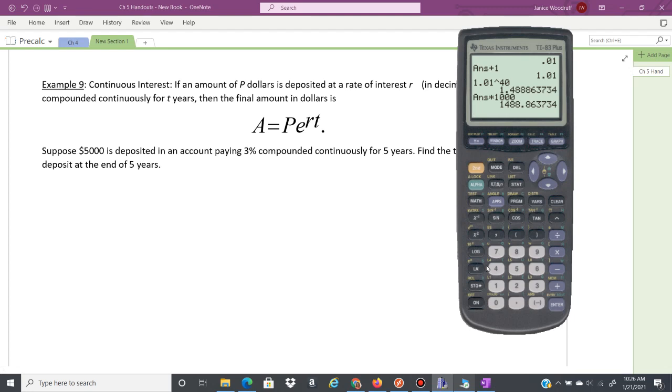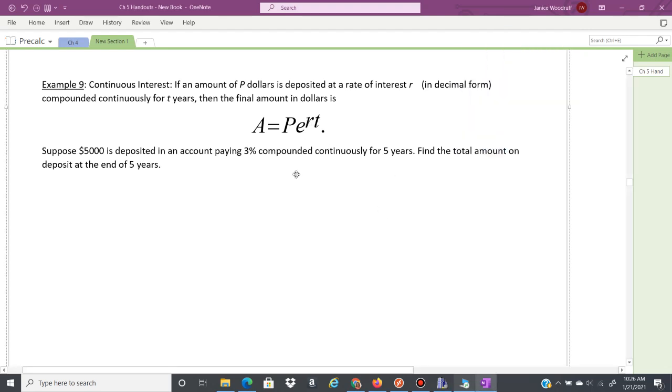So you have a principal. E is this button in your calculator, which if you look just right here to the left of 4 in the yellow, e to the x there, exponential equation here, your rate and your time. So you have here $5,000, that's going to be your p, is deposited in an account paying 3%, so that's your rate, 0.03. Compounded continuously, so that's just telling you that you're using this formula, and your time is 5 years.